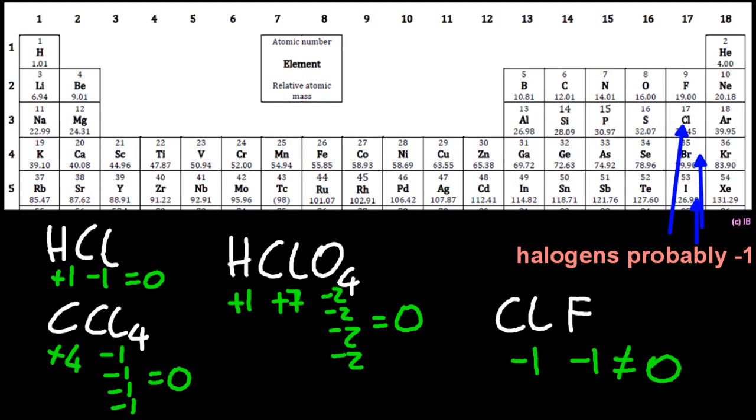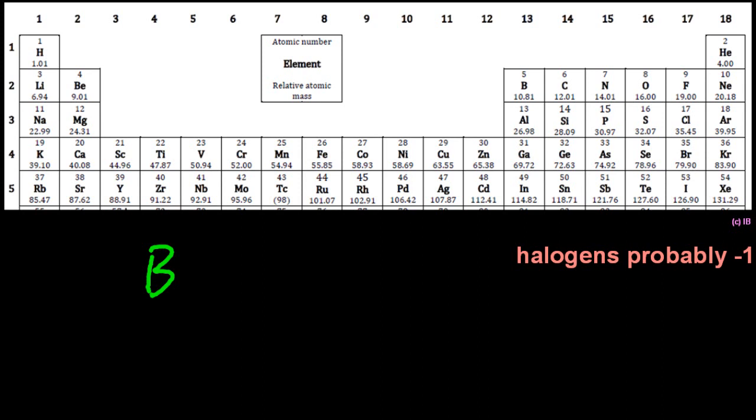Is chlorine going to be minus one here? Chlorine monofluoride? No, it's not. That's going to be plus one. The halogens are only probably minus one. Except for fluoride, which is minus one.